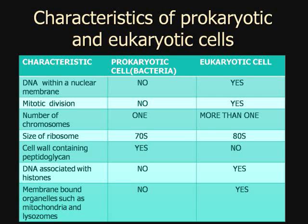Cell wall containing peptidoglycan: do prokaryotic cells have that? Yes, they do — they have peptidoglycan. Eukaryotic cells do not have cell walls; they only have nuclear membranes as well as flexible cell membranes. That's actually a main difference between eukaryotic and prokaryotic cells.